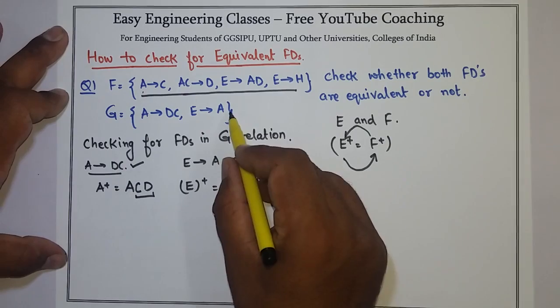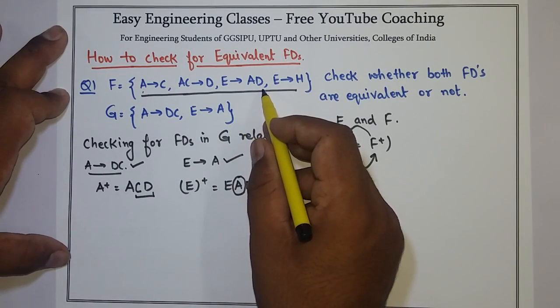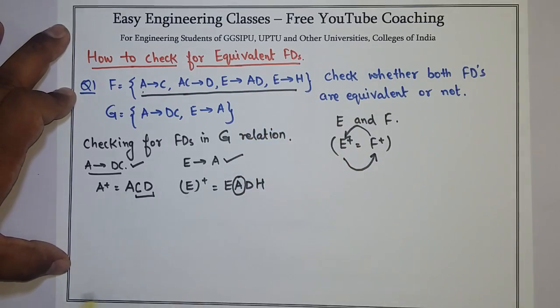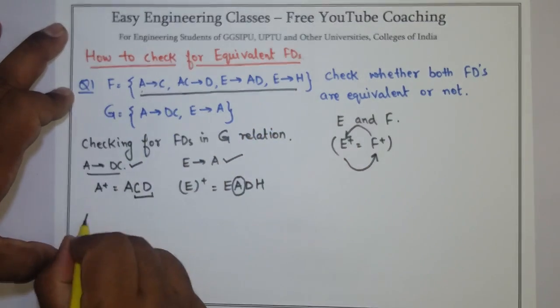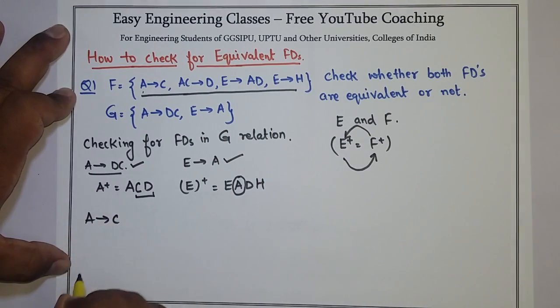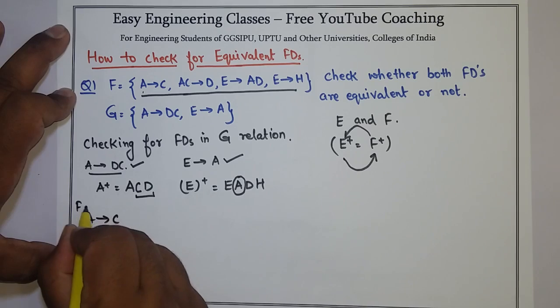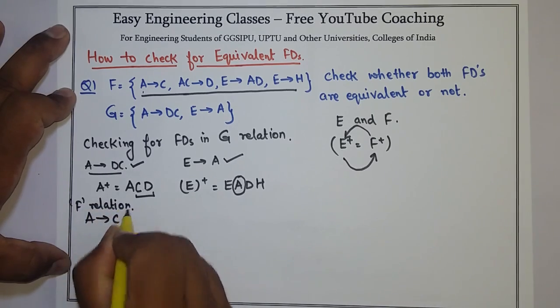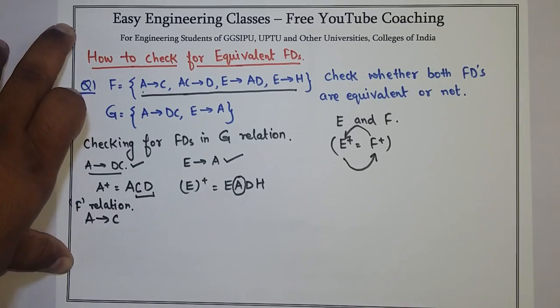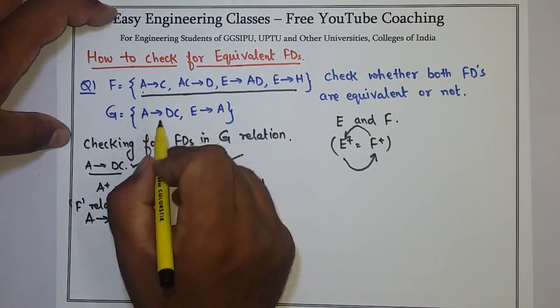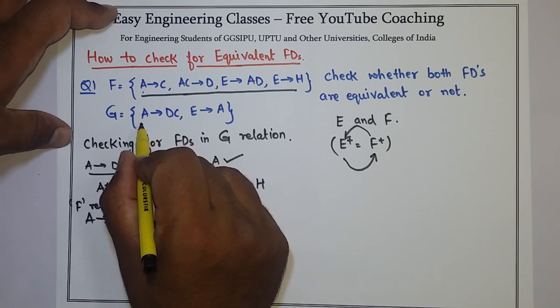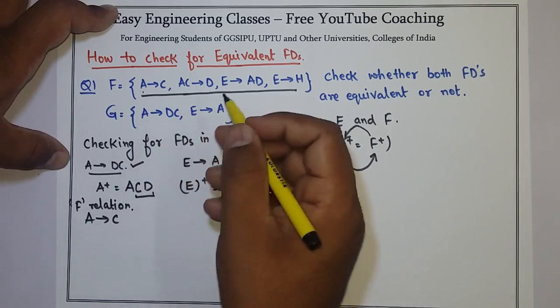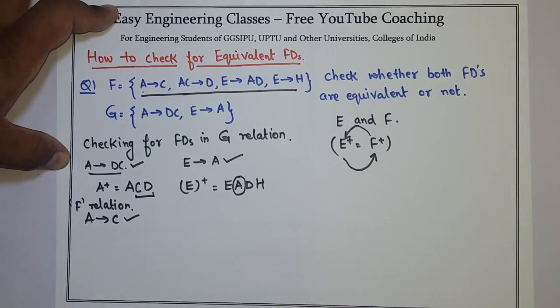So we saw that G can be inferred from F. But can F also be inferred from G? Let's see. The first FD I have is A determines C. Now I am checking for the FDs in relation F. A determines C we can directly infer from FD given in G, that is A determines DC. So A determines C is correct.